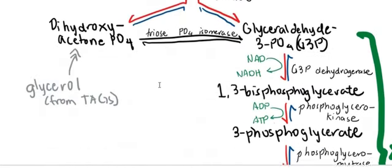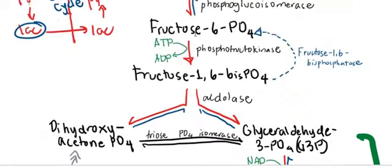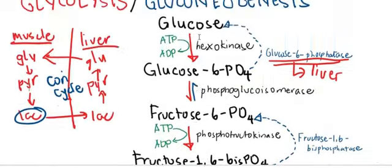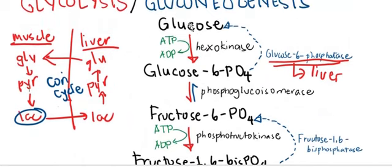Also note that glycerol can also be converted to glucose by first converting it to dihydroxyacetone phosphate (DHAP), and then going back up to glucose. As far as glycolysis is concerned, when going from glucose to pyruvate, you should be mindful of the processes that generate and use ATP.